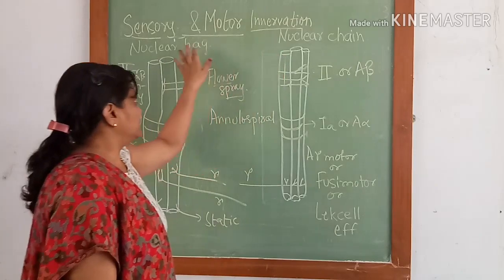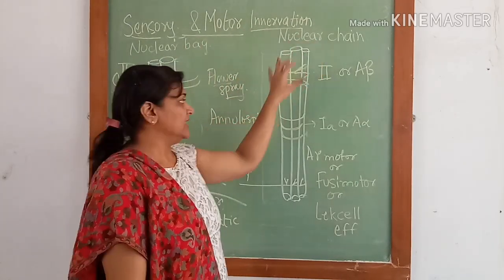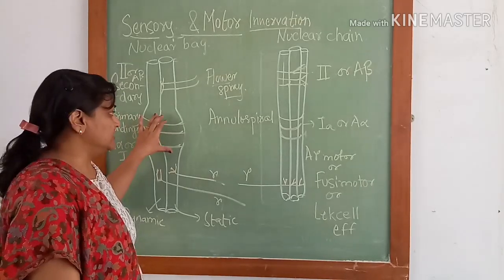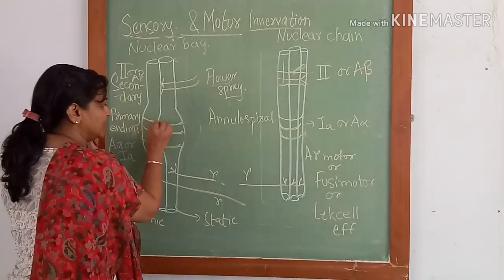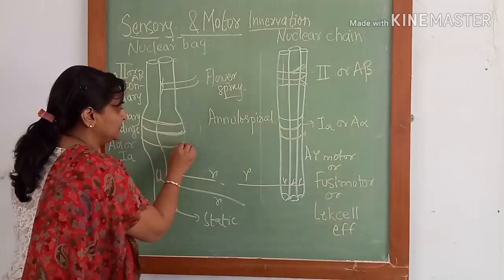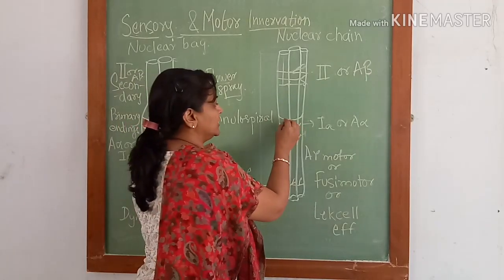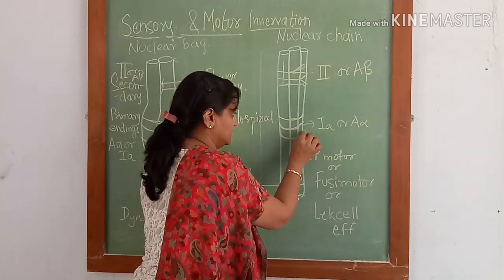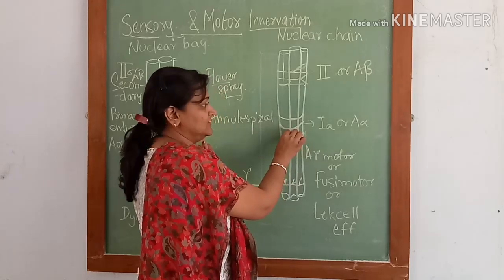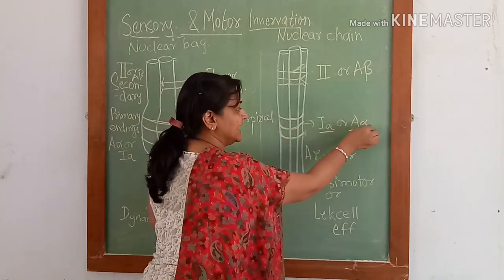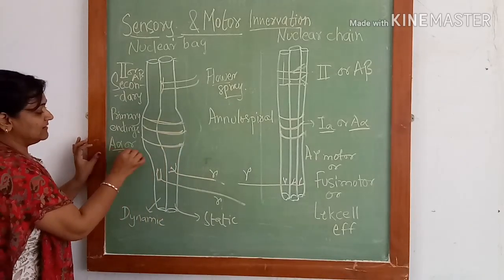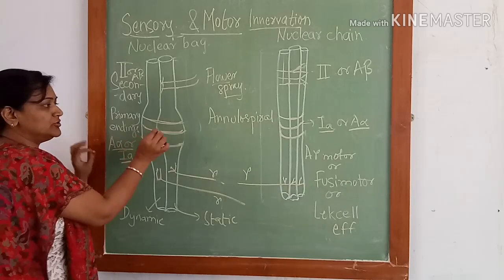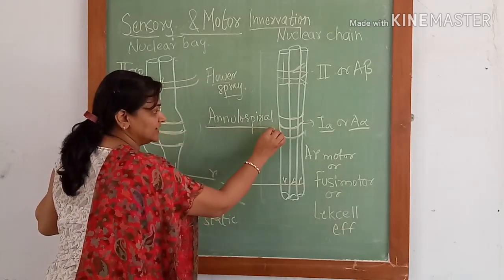There is both sensory and motor innervation of the intrafusal fibers of the muscle spindle. The central portion of the nuclear bag and nuclear chain fibers is innervated by sensory nerves that spiral around them. This sensory innervation is of type 1A or A-alpha, known as primary endings, and due to its structure it is also called annulospiral fibers.